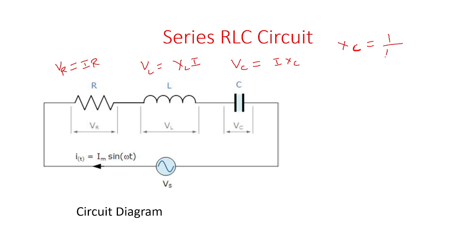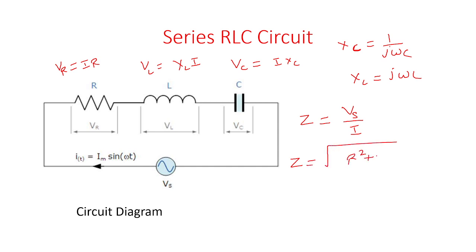Xc is 1 divided by jωC and XL is jωL. Inductive voltage is leading at an angle of 90 degrees from the current and capacitive voltage is lagging at 90 degrees from the current. The impedance of the circuit can be calculated by voltage Vs divided by I, and impedance is the square root of R squared plus (XL minus Xc) whole squared.